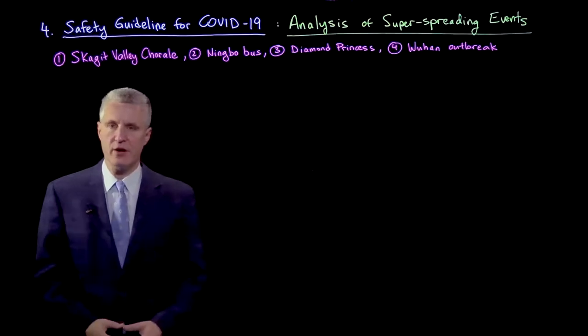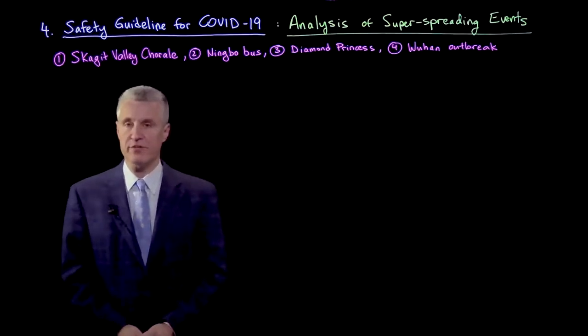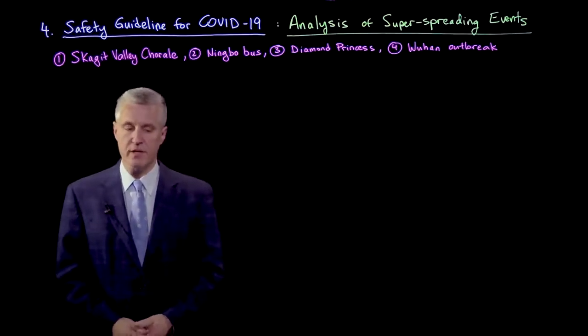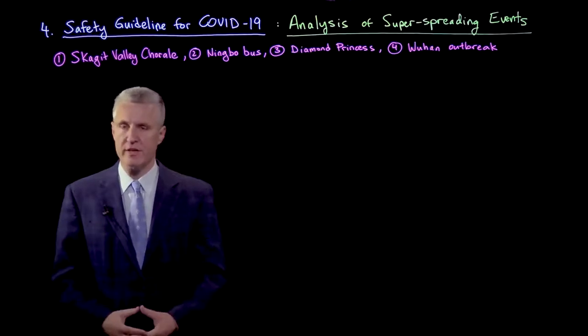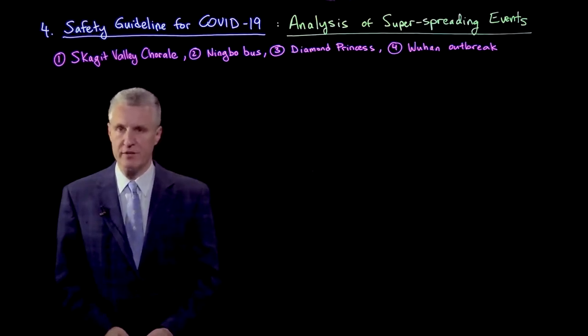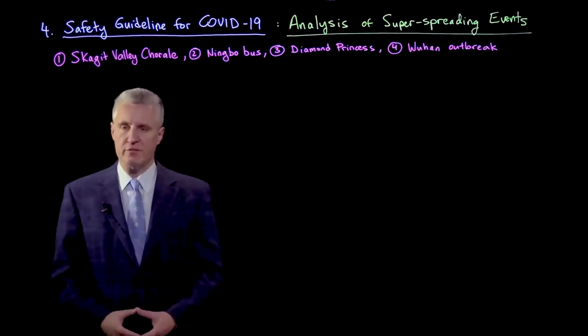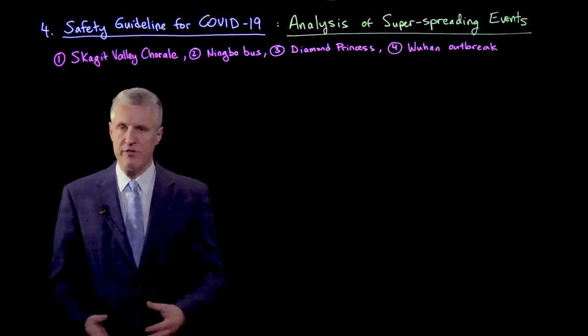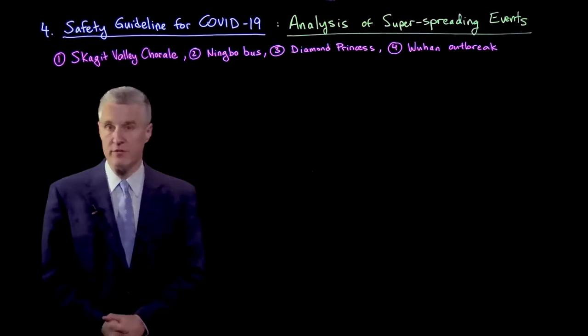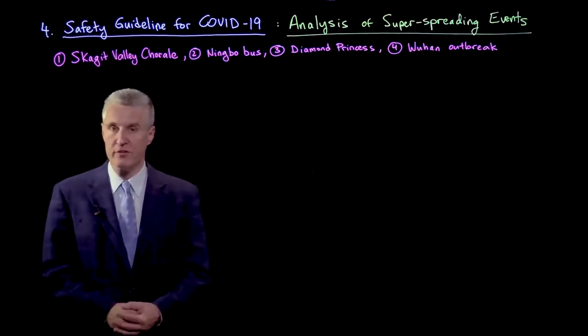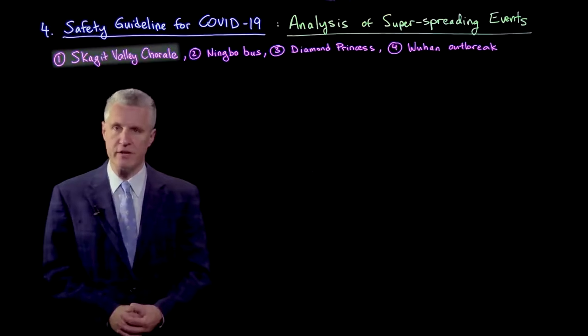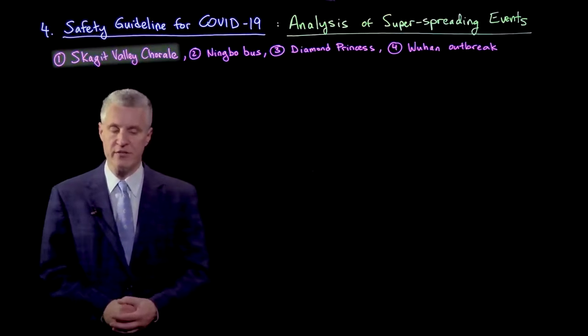Let's go through how we can parameterize our guidelines specifically for COVID-19 by looking at specific super-spreading events. The event that was analyzed in great detail first, and which is going to be most useful for parameterizing the guideline, is the Skagit Valley Corral super-spreading incident.